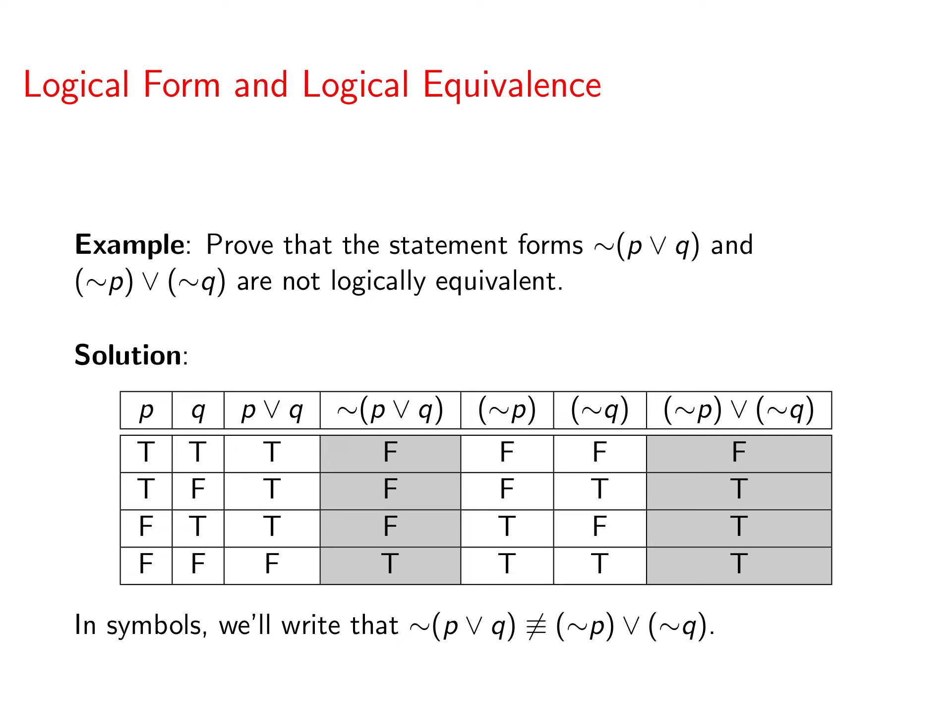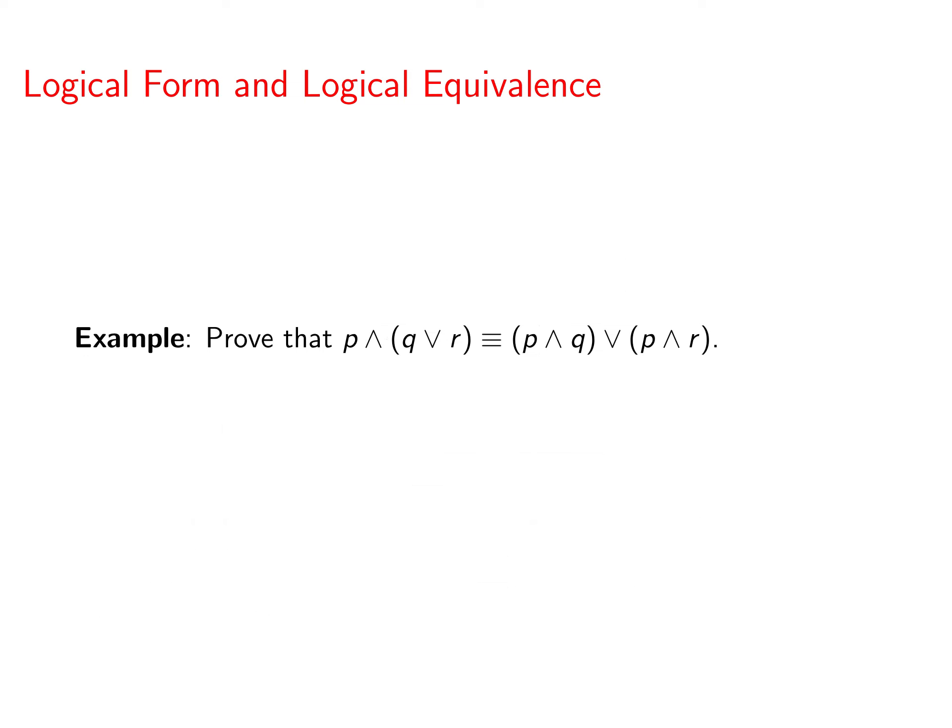So what we'll write in symbols when we want to say that two statement forms are not logically equivalent, we're going to use this symbol here. It looks like an equal sign with three bars and we put a not through it to indicate that they're not logically equivalent. So of course, if they are logically equivalent, then we'll use that triple equal bar.